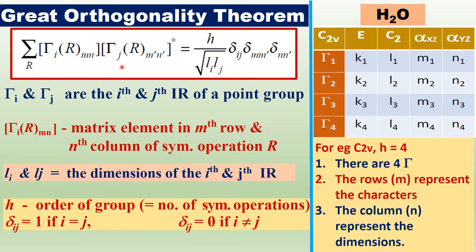Here, Γ_i and Γ_j are the i-th and j-th irreducible representations of a point group. To understand this, consider the water molecule with point group C2V. There are four symmetry operations: identity E, C2 axis, and two planes of symmetry. There are four classes and therefore four irreducible representations: Γ1, Γ2, Γ3, Γ4.